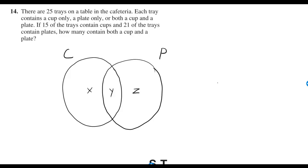There are 25 trays on a table in the cafeteria. Each tray contains a cup only, a plate only, or both a cup and a plate.